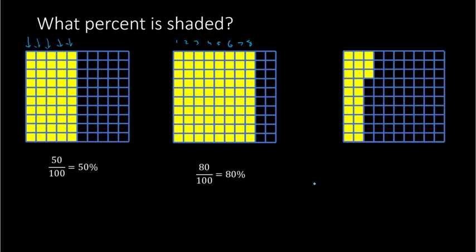This next example — we need to figure out what percent is shaded. Here we have 10 in this column plus 10 more in this column, that's 20, and then we have 1, 2, 3 more shaded in. So we have 23 out of the 100 total — 23 hundredths, or 23% of this is shaded in. This is one way to picture what we mean by percent.